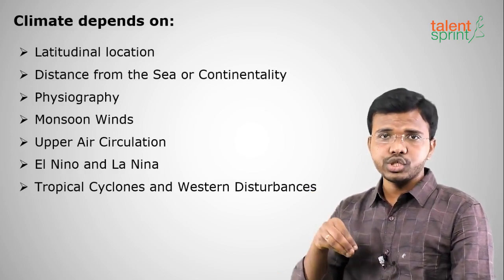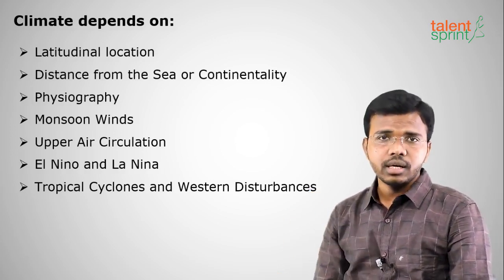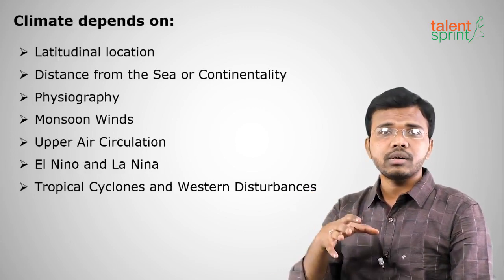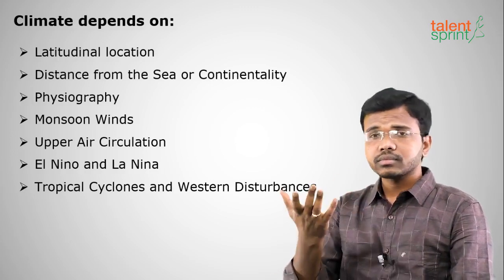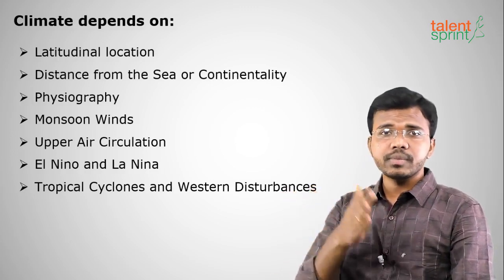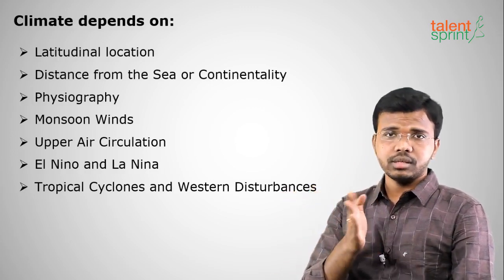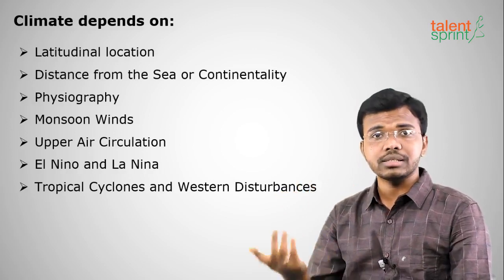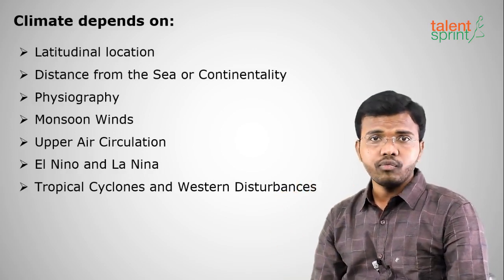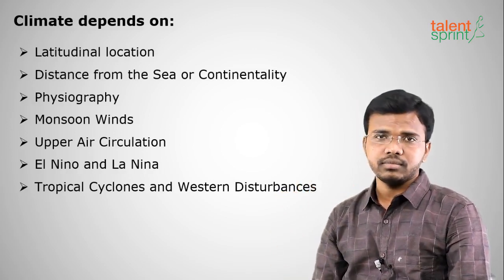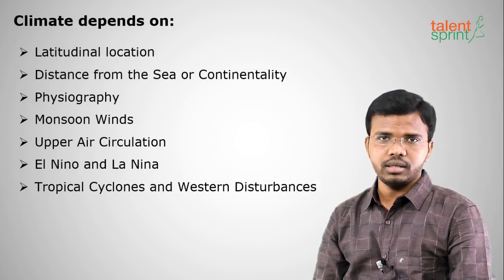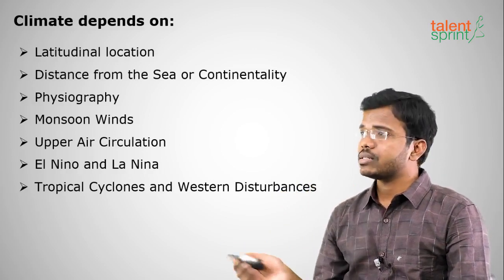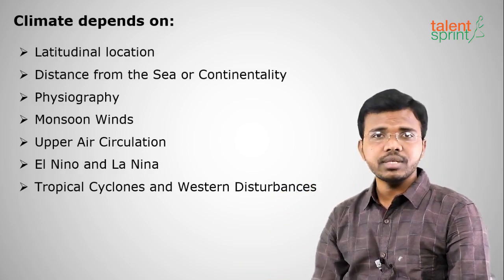That's why Antarctica has six months of sun and six months of no sun — that's why the Arctic or Antarctic region is called the land of the midnight sun. The next factor is distance from the sea, also called continentality.